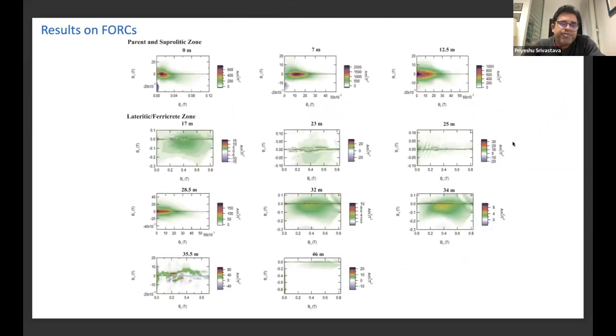We also did some FORC measurements on these samples. Where we can see there is a change in the parent rock towards the top. I'm not an expert in the FORC measurements yet, but I think there is a change in the grain size from bottom towards the top, based on the magnetic interactions, as well as the change in the loop.